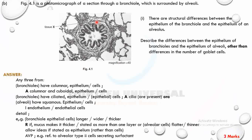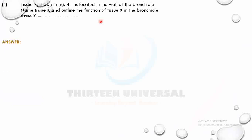When smooth muscle contracts, the airway becomes constricted and less air reaches the alveoli. When it relaxes, the airway becomes dilated and more air reaches the alveoli, or more air is forced out. Elastic fibers, by contrast, prevent the bronchiole from rupturing and provide mechanical support.